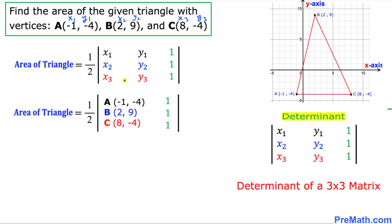So then this formula could be written in terms of these points A, B, and C right here. So I can simply write these numbers down as negative 1, negative 4, 2, 9, 8, negative 4, and these 1, 1 entries, they're going to stay the same.